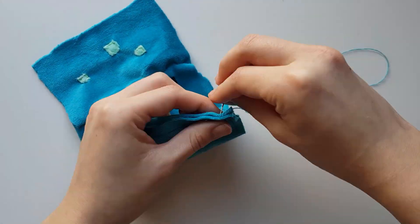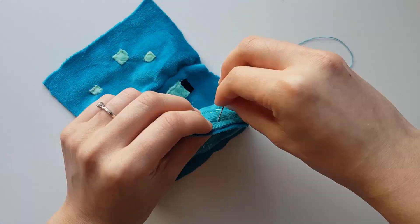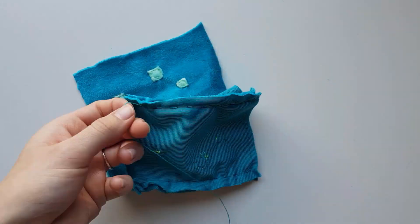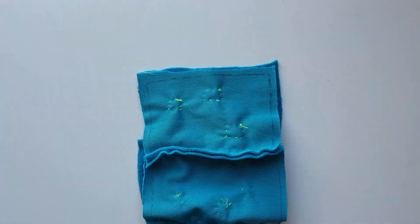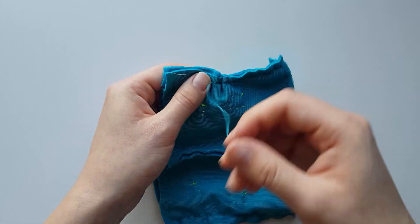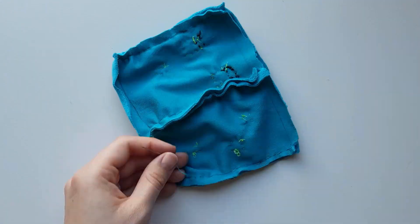After, sew the back body piece to the longer width side of the side piece. And finally, sew the last longest width side to the other side piece. You should now have a rectangular tube.